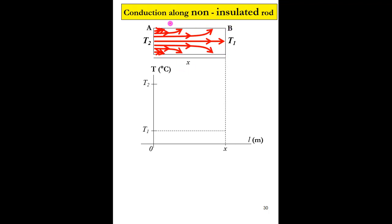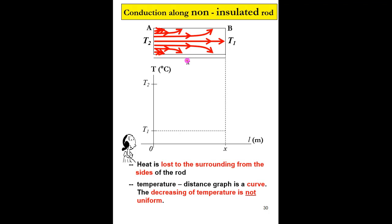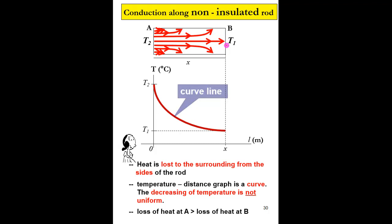For heat conduction along a non-insulated rod — a rod not covered with any insulator — the heat will be able to escape to the surrounding from the sides of the rod. As heat is transferred from the hot end towards the cold end, some heat escapes from the sides. The decrease of temperature is not uniform with distance, because some heat is lost to the surrounding. We get a curve, whereby the loss of heat near point A is much greater than near point B. So for a non-insulated rod, we get a curved line.